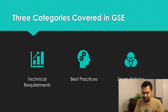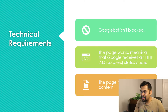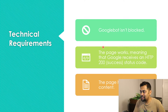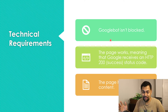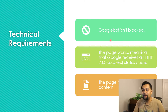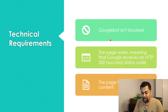So the first category is technical requirements, and Google has simplified it a lot. Essentially, you want to make sure that your website is crawlable — Google's bot is not blocked — which means web crawlers can find your page, index it, crawl it, and understand the content. At a bare minimum, it means that your robots.txt file on your website does not block search crawlers.